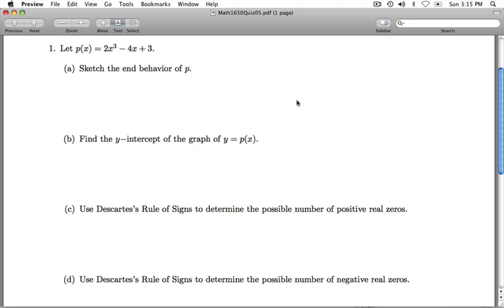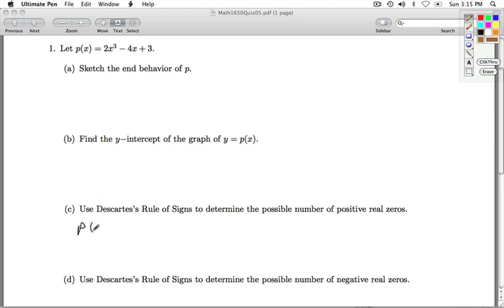Part C, we're asked to use Descartes' rule of signs to determine the possible number of positive real zeros. So, to look for positive real zeros, I look at the coefficients of P of x. They're positive, negative, positive. And I count the variations in signs.